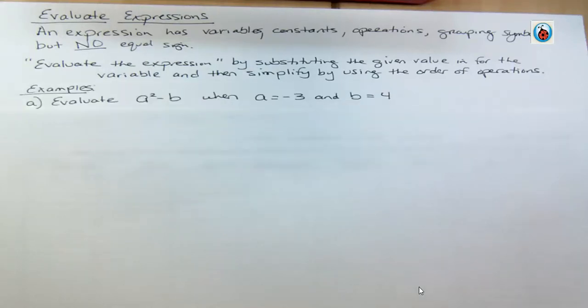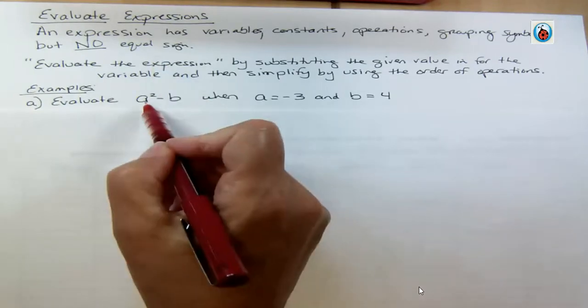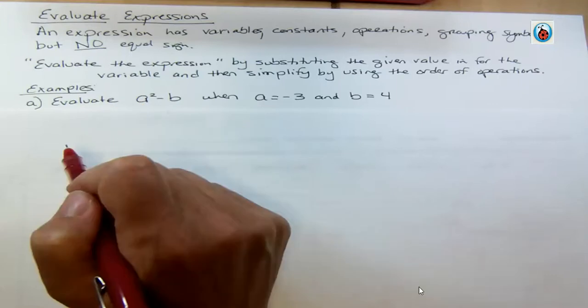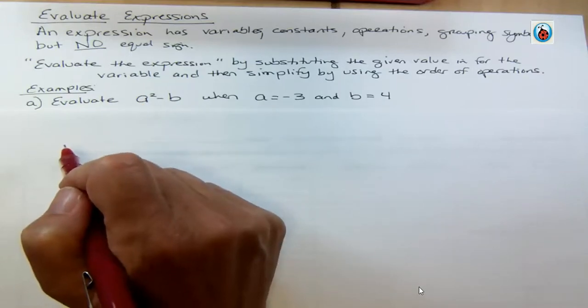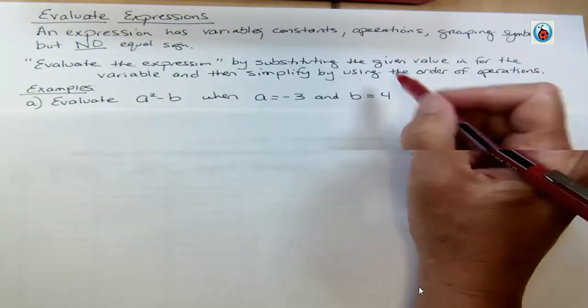So let's look at an example. This says evaluate a squared minus b, so we have variables there and an exponent and subtraction, and it tells us when a is negative 3 and b is 4. Whenever you substitute in for an expression, if you put parentheses around that, it will serve you well.